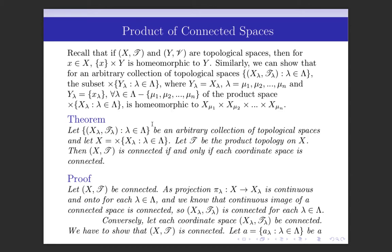Before coming to the main theorem, recall that if (X, T) and (Y, V) are topological spaces, then for x in X, the singleton {x} × Y is homeomorphic to Y. We have proved this result earlier. Similarly, for an arbitrary collection of topological spaces {X_λ, T_λ}, the subset — Cartesian product of Y_λ's where Y_λ = X_λ for λ = μ₁, μ₂, …, μₙ and Y_λ = {a_λ} (singleton) for each other λ — is homeomorphic to X_μ₁ × X_μ₂ × … × X_μₙ.